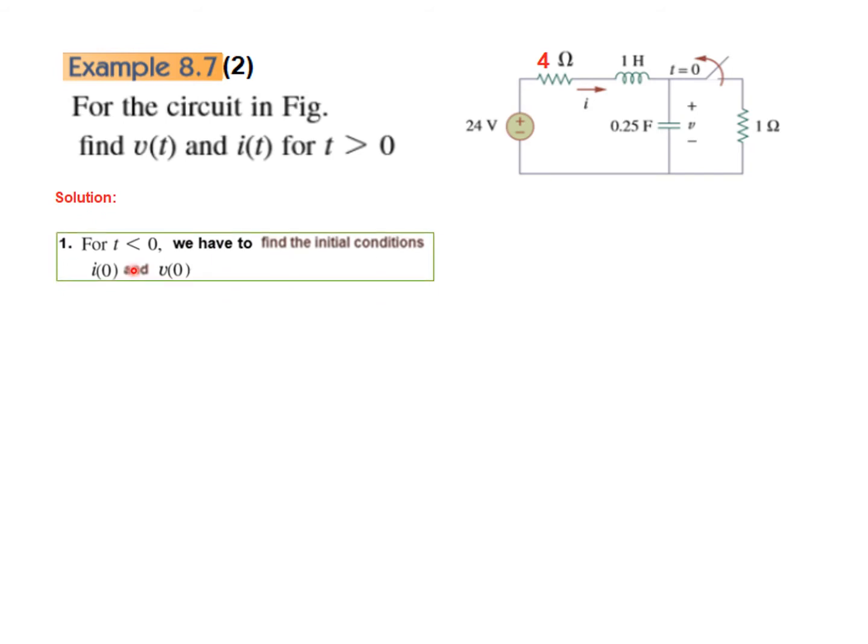Step number 1: Find I0 and V0. This is the circuit for T less than 0. The circuit is in steady state. Therefore inductor becomes short circuit, capacitor becomes open circuit, and this switch is closed. For T less than 0 it is closed. At T equals 0 this will be open. We have to find the current through the circuit. So 4 plus 1 is 5 ohm resistance, 24 divided by 5 will give us the current. So current is 4.8 ampere. This voltage is the voltage across 1 ohm. So 4.8 multiplied by 1 will give the V0. So V0 is 4.8 volt.